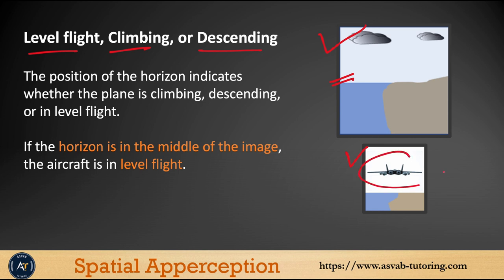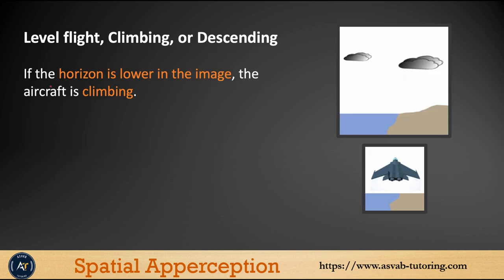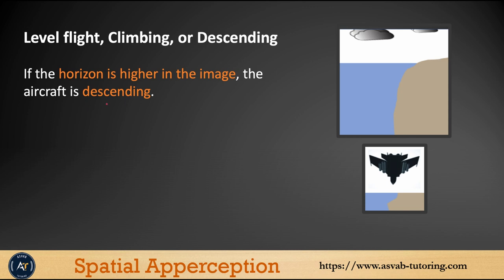If the horizon is lower in the image, the aircraft is climbing — it seems like the aircraft is going upward. If the horizon is higher in the image, the aircraft is descending — you can see the image showing it going downward.